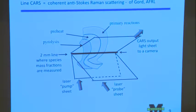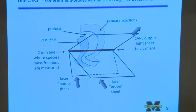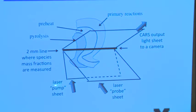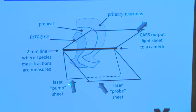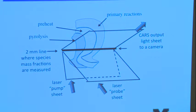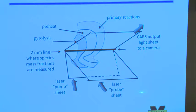I'm not going to go over CARS in detail. The idea is if you want to image along a line with CARS, you have to have a sheet of light - the pump laser that excites a particular molecule. Then you disturb it with a probe sheet at a different wavelength that crosses the first sheet.